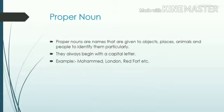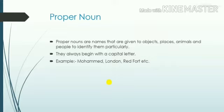Definition of proper noun. Proper nouns are names that are given to objects, places, animals, and people to identify them particularly. So, proper noun jo hum naam dete hain kisi cheez ko, kisi jaga ko, kisi animal ko, ya phir kisi insaan ko, phehchanne ke liye particularly — usse hum proper noun kehte hai. They always begin with a capital letter. Proper noun humayasha capital letter se hi start hota hai. Example: Muhammad, London, Redford, etc.